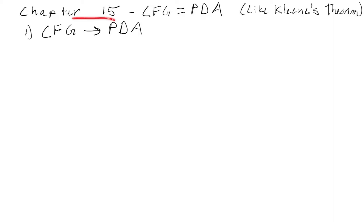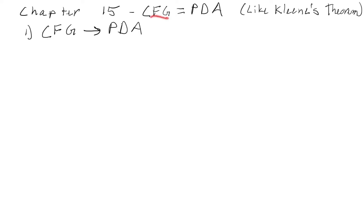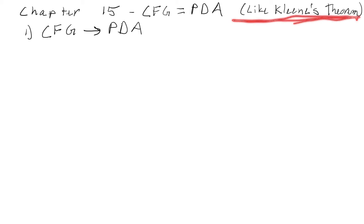Welcome to CS320, Chapter 15, where we're going to prove that context-free grammars and push-down automatas are essentially equal. That means all the languages we can define with a context-free grammar can also be defined using a push-down automata, and all languages defined with a push-down automata can be defined with a context-free grammar. This is exactly like Kleene's Theorem, but now we're doing it for context-free languages.